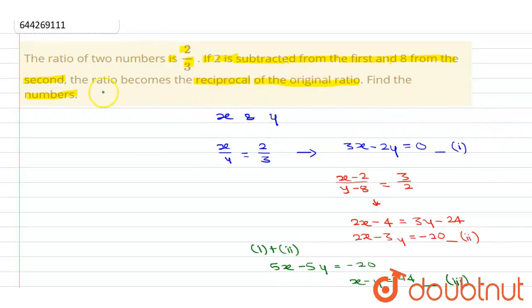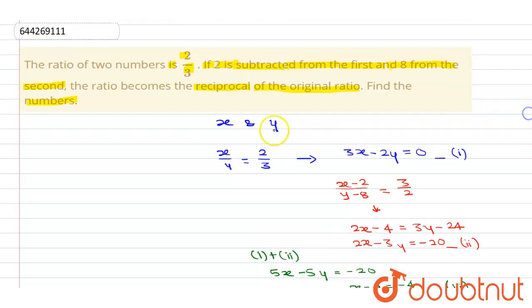Now, we need to find the numbers. Therefore, the numbers are y is equal to 12 and x is equal to 8. This is our final answer.